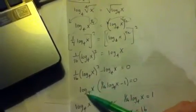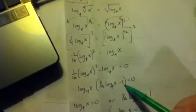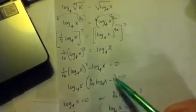I'm going to factor out a log base four of x and then use the zero product property. So set each factor equal to zero.